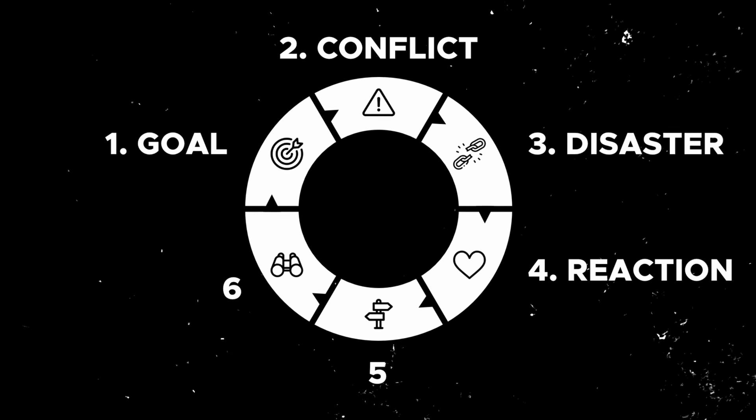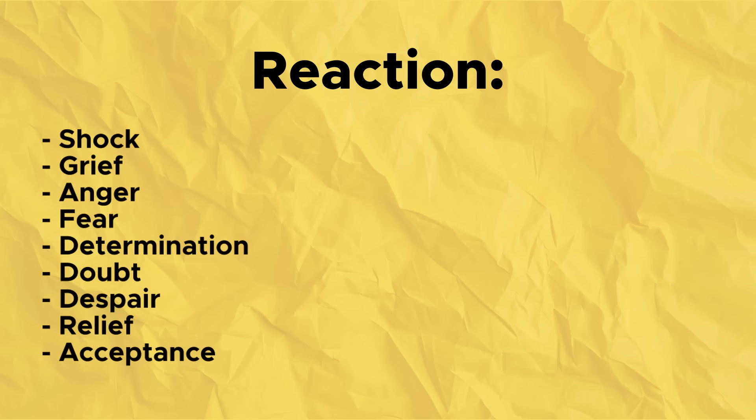Now we get to step four in our six-part scene structure: the reaction. Something just went wrong for your protagonist — how does that make them feel? That's what the reaction phase is all about: the character's emotional response to the disaster that just occurred. Maybe your character feels shock, grief, anger, fear, determination, doubt, despair, relief, or acceptance. This is the step that really creates emotional bonding between your reader and your characters. By showing the vulnerability of your characters and bringing readers into their internal emotional life and experience, you create a tremendous sense of sympathy and connection with them.